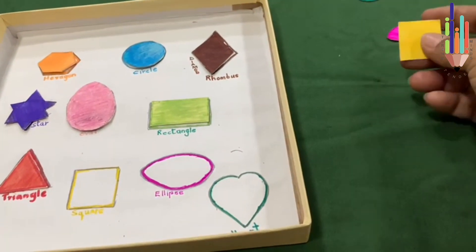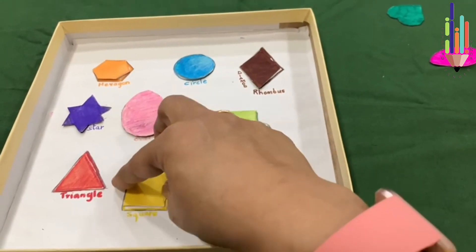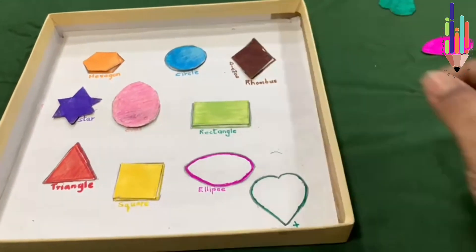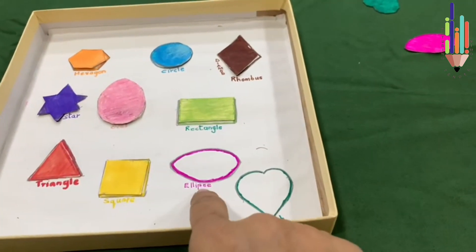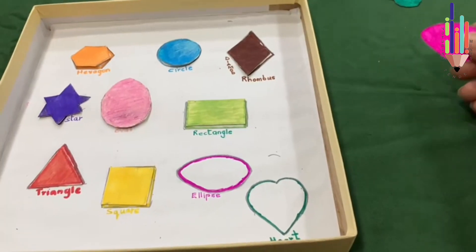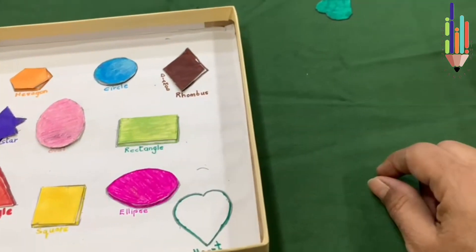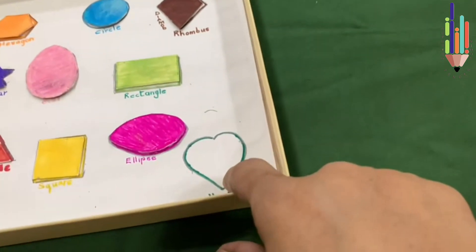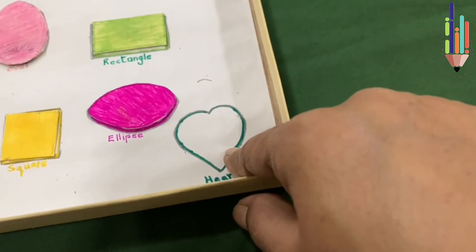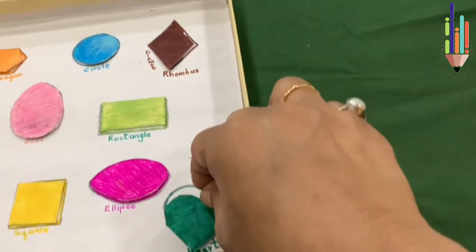And place it in the shape that is here. Now here I've got a square. Next is the pink one which is the ellipse. Here I've got the ellipse. I take it and I put the cutout on this shape. Now I have got a heart shape which is green. Here is your heart shape. I place it on this.